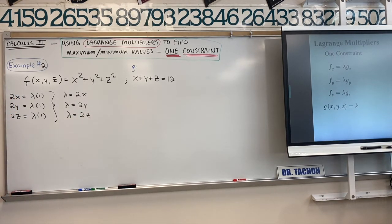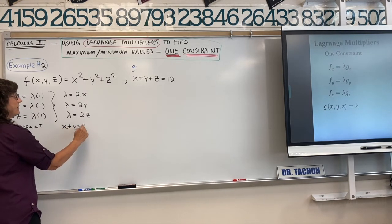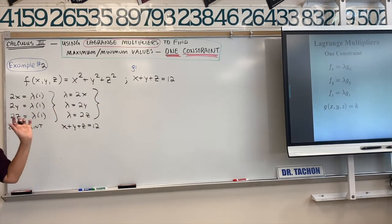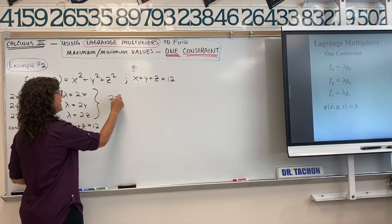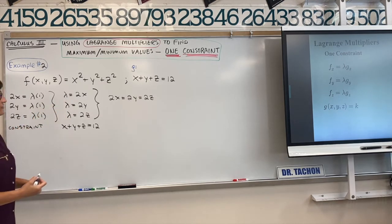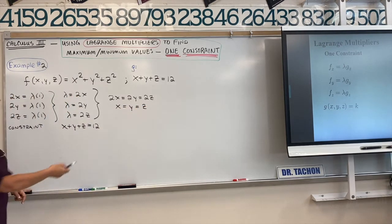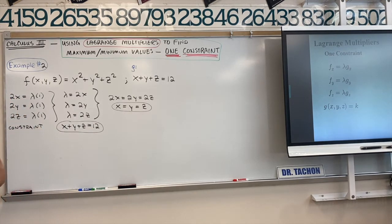Since lambda equals 2x, 2y, and 2z, all three are equal to each other. Dividing every term by 2 gives x equals y equals z. We also have the constraint x plus y plus z equals 12. Lambda helps us generate the relationship between x, y, and z, and we use the constraint as our second equation to solve the system.